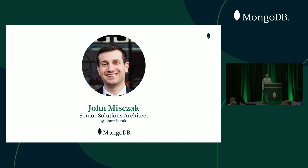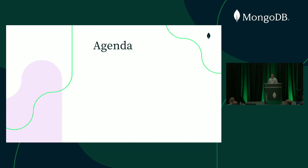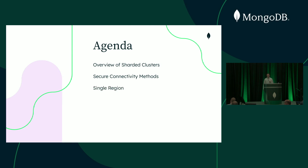My name is John Mizek. I'm a senior solutions architect here at MongoDB. Before I was a solutions architect, I worked in application security and security engineering, so this is a topic that's near and dear to my heart. This is going to be a quick talk focusing on common patterns for securely connecting your application to your MongoDB Atlas cluster. We'll start with basic sharded terminology, then discuss connectivity options for single-region and multi-region clusters, and wrap up with some edge cases.